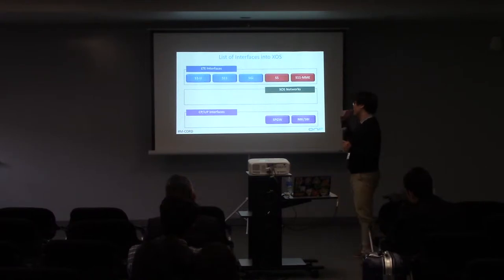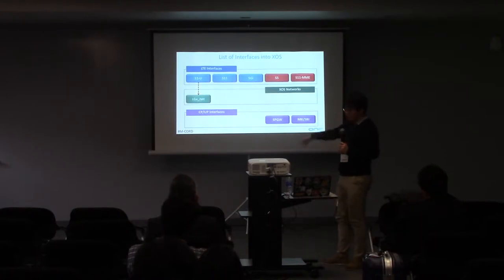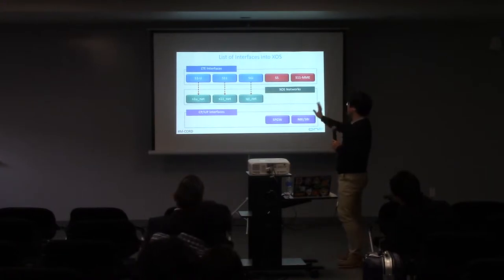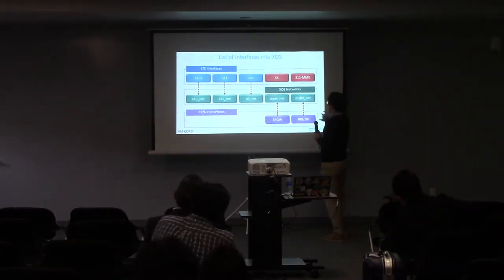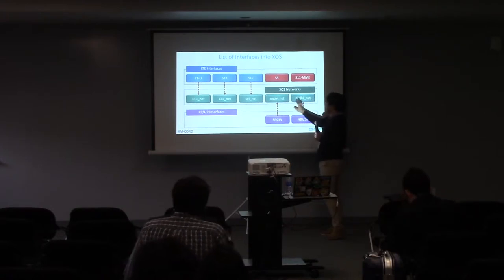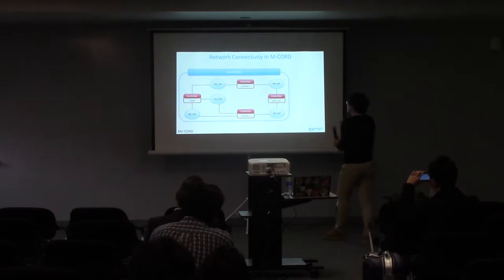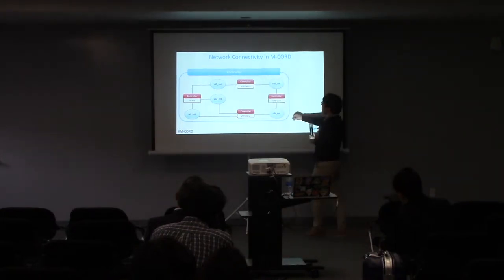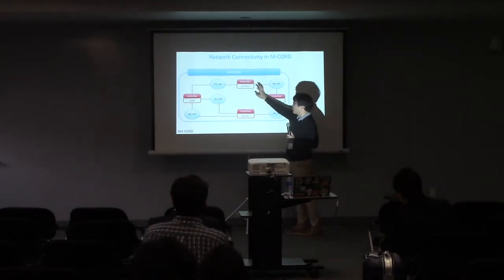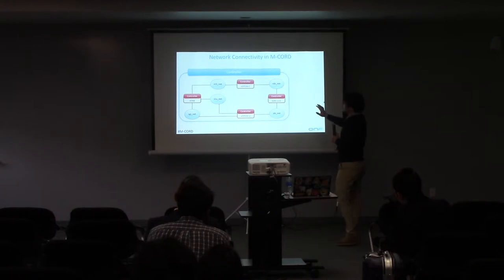Each interface should map to an XOS network in the mCORD pod. First, we make the S1U network for the S1U interface in XOS, then make the S11 network and SGI network for the S11 and SGI interfaces respectively. For the optional SDN controller case, we should make the NBI network and SBI network. Otherwise, we make the SP Gateway network in XOS. Those three — S11 network, S1U network, and SGI network — are for LTE interfaces, and we additionally use the SDN controller between control plane and user plane.